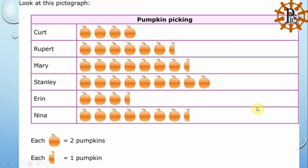Now we are going to look at the second topic in this lesson: the pictograph, which uses pictures to represent data. First, we look at the key at the bottom. The key tells us the value of each symbol — for example, one full picture equals two, and a half picture equals one.